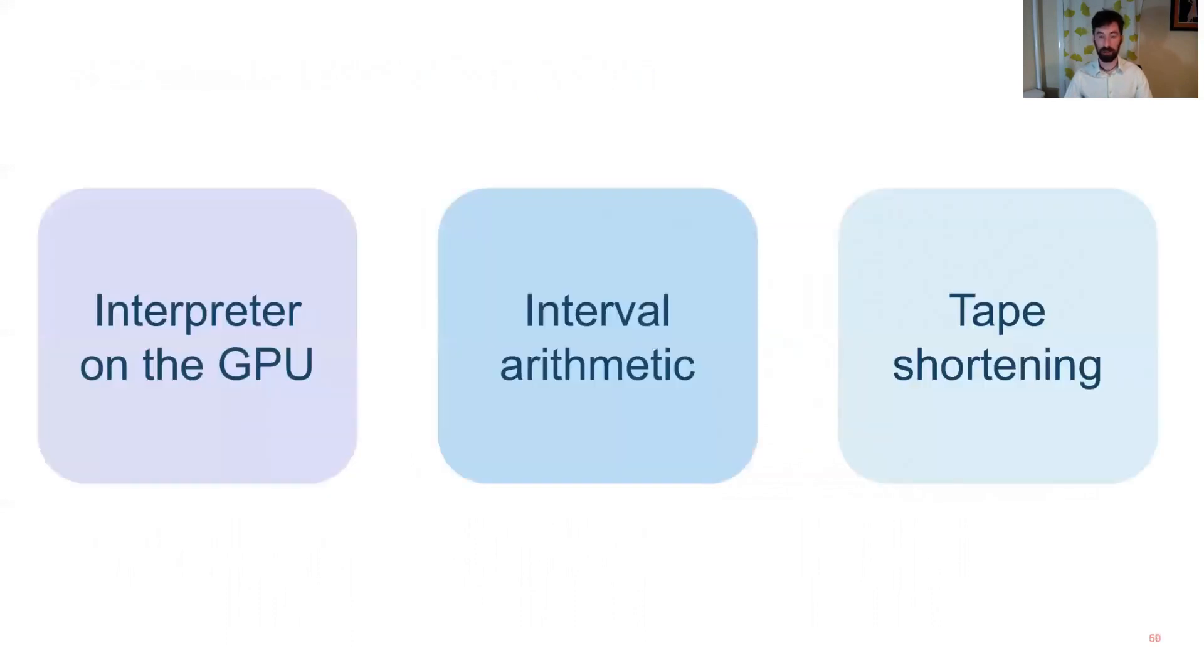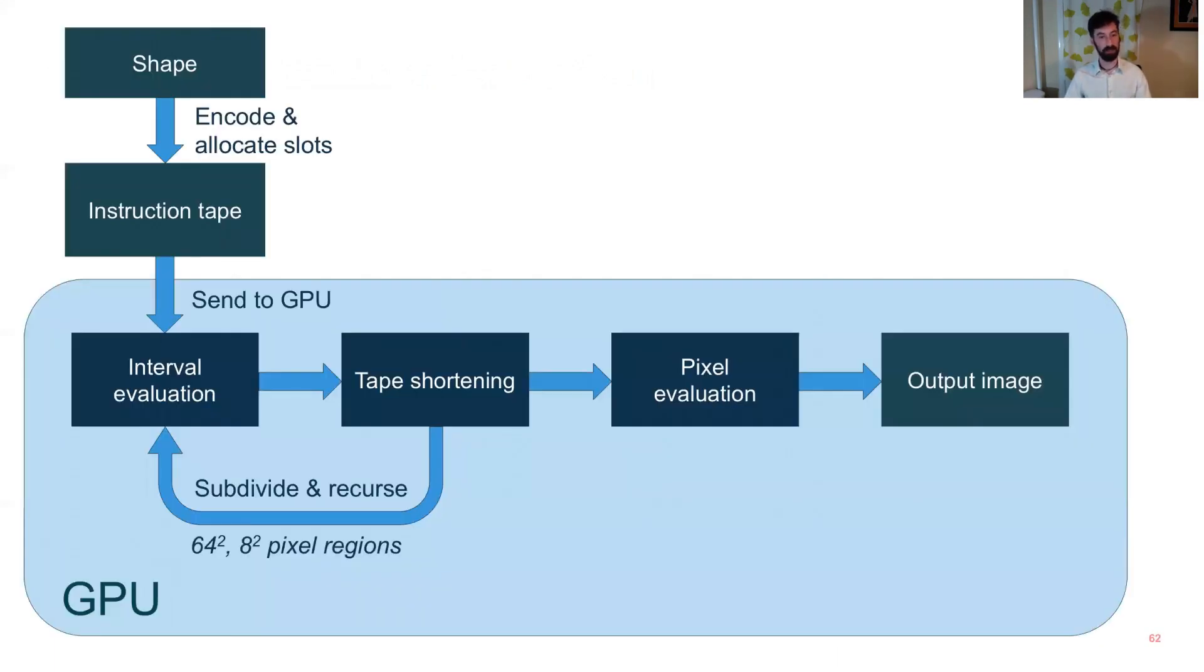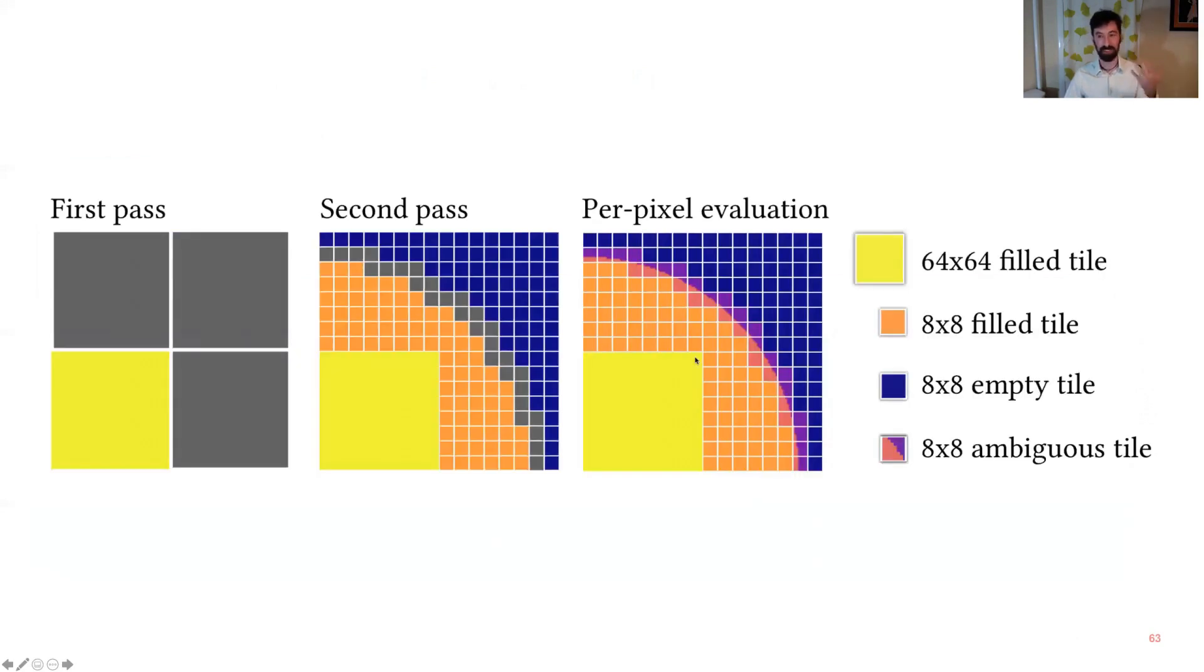Alright, so we've presented all of our three building blocks, which means we can now put them together into a full algorithm. So we take the shape, we encode and allocate slots, we send the instruction tape to the GPU, and then we do cycles of interval evaluation, followed by tape shortening on pixel regions, and then we do pixel evaluation as a final pass. And if you're paying attention, this is exactly the same image that I've been showing all along, where we do these first and second passes with intervals. We subdivide by 8x on each axis, so 64x total, and that's important. And then we do per pixel evaluation here, and so this gives you your final image.